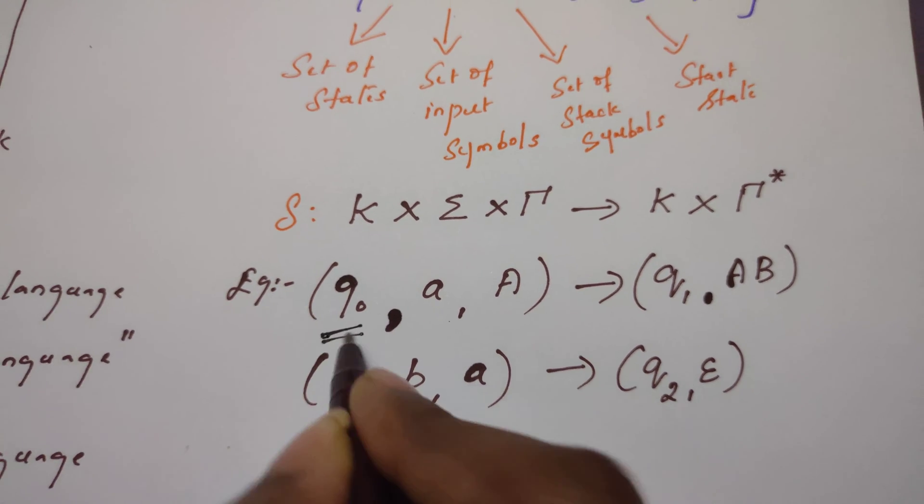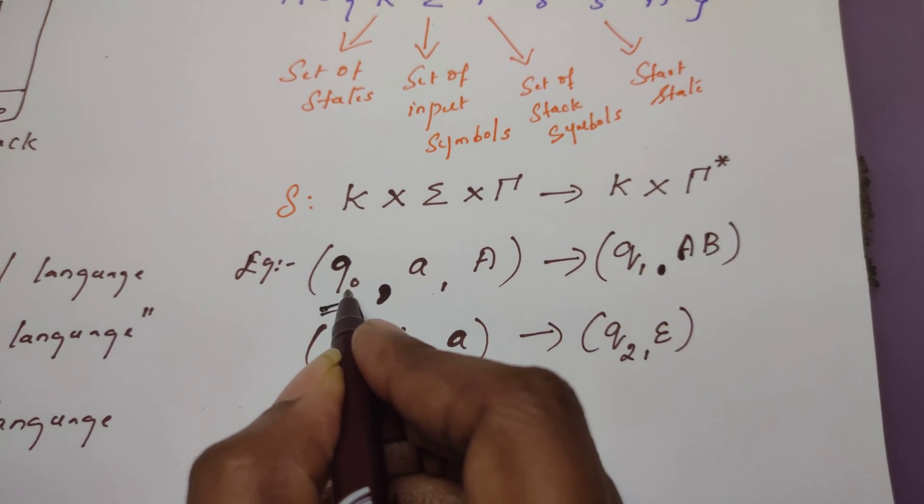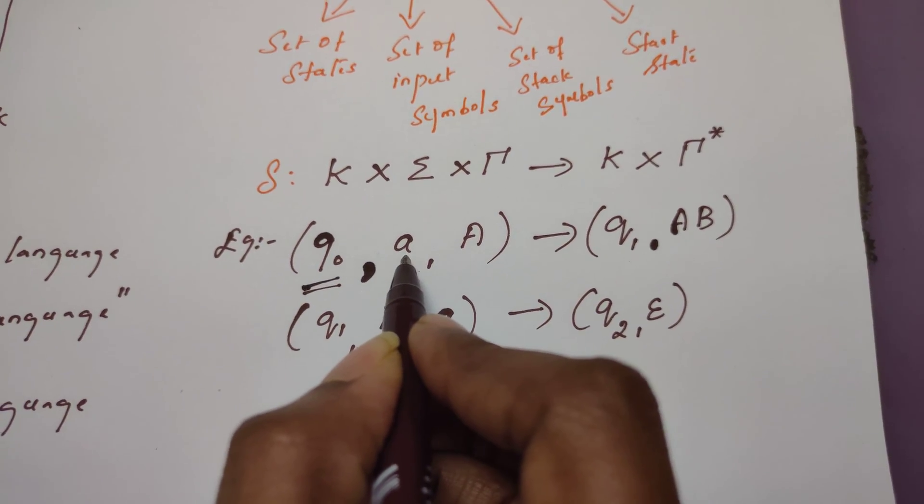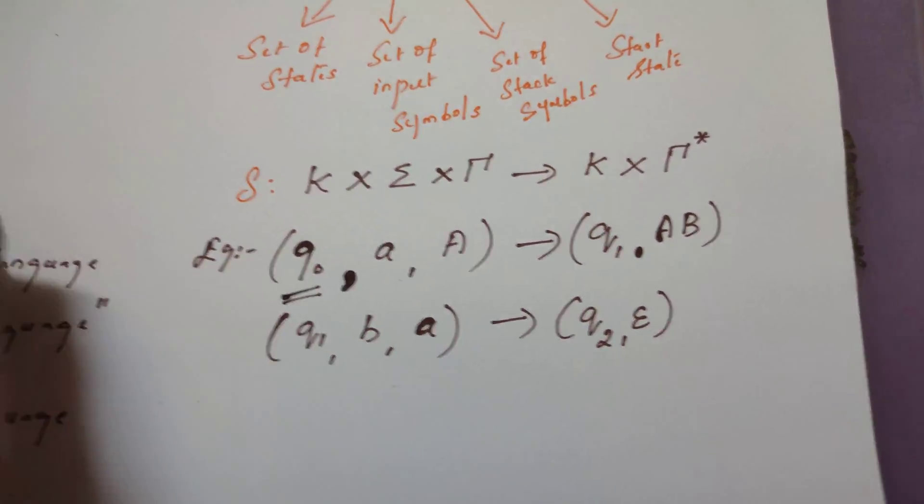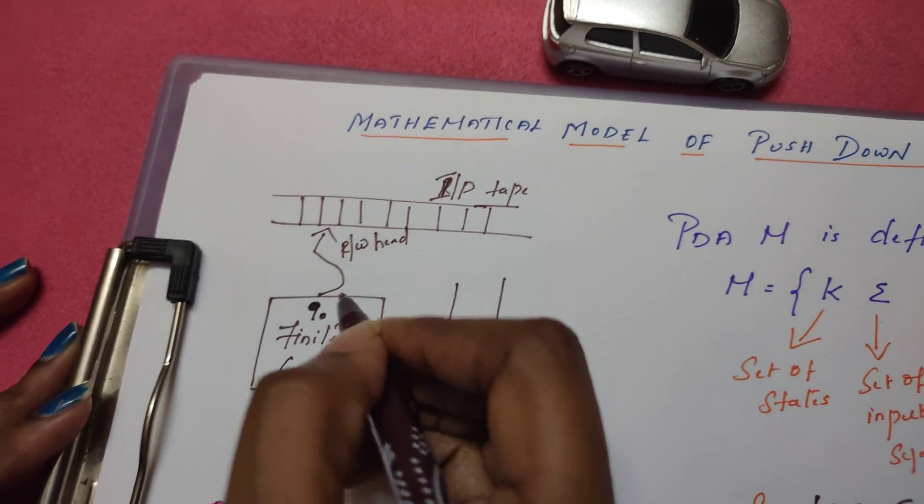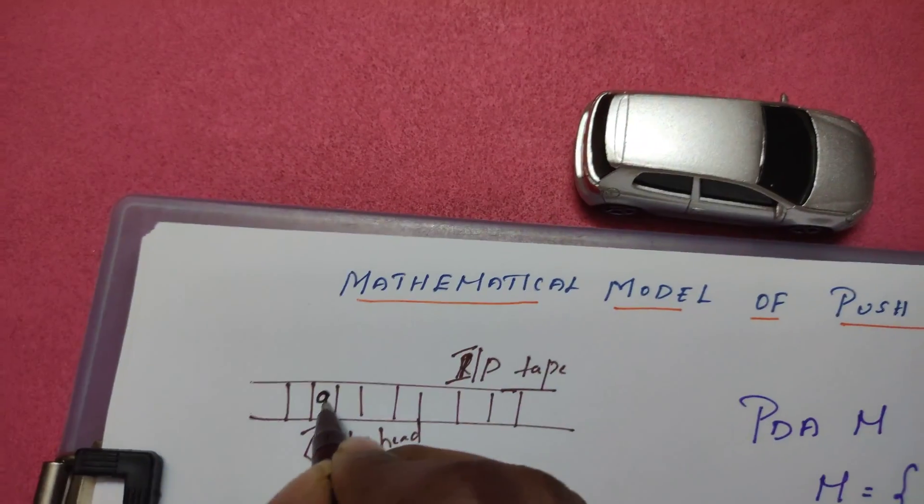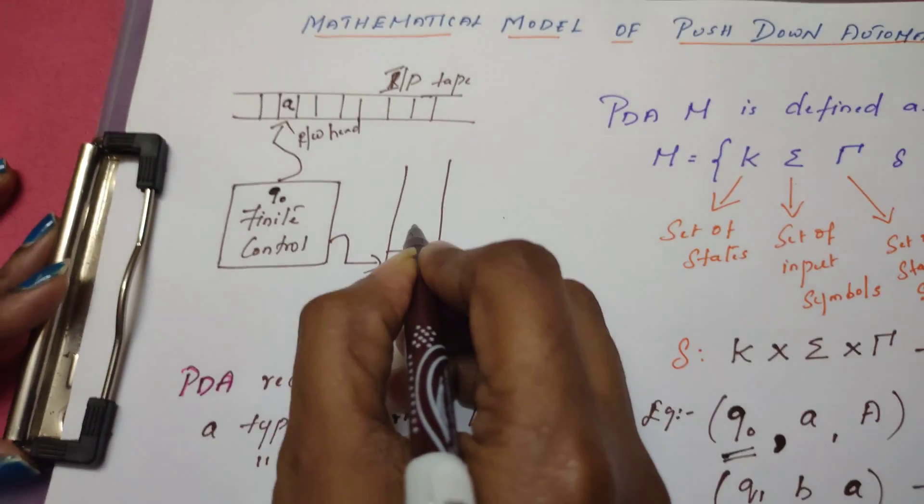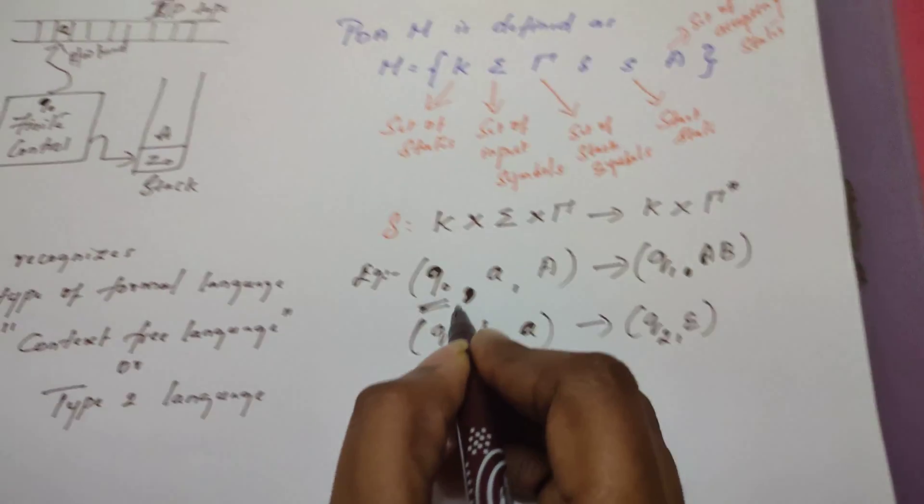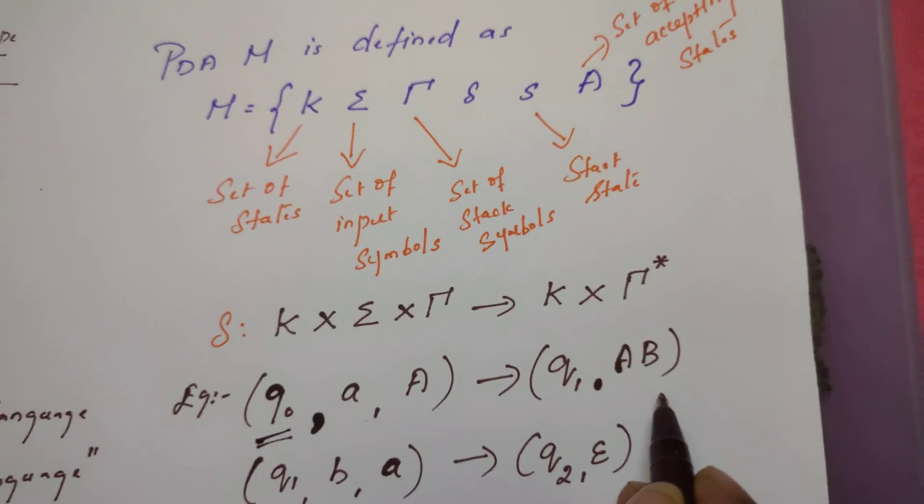For example, let us take the PDA in state Q0. Let us assume it reads the symbol A. The current state of PDA is Q0, it reads symbol A, and the top of the stack is A. This is given by the scenario on the left-hand side. On the right-hand side, we see what happens.